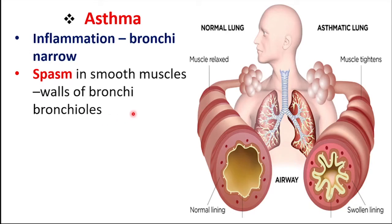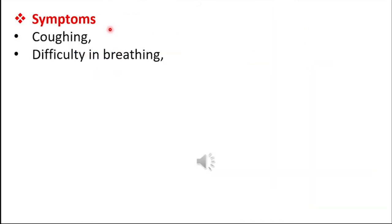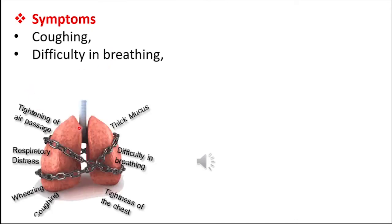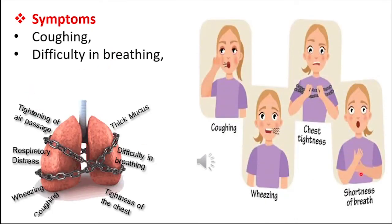The sudden involuntary muscular contractions are collectively known as spasm. When these muscles undergo spasm, they contract and the lumen decreases. If the lumen is narrow, breathing becomes difficult and heavy. Due to inflammation of bronchi and bronchioles and smooth muscle spasm, asthma patients experience breathing difficulty. The symptoms of asthma include coughing, difficulty in breathing, chest tightness, and shortness of breath.